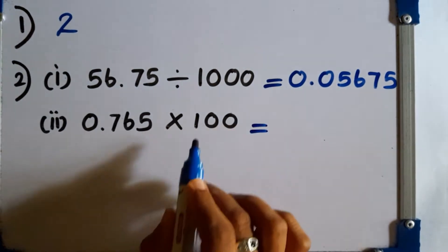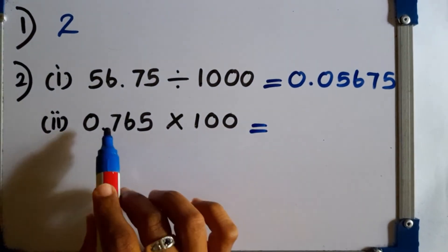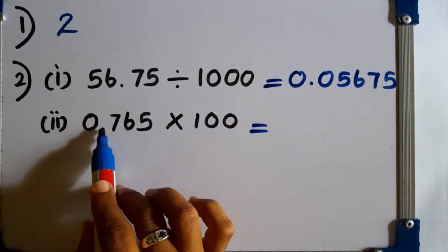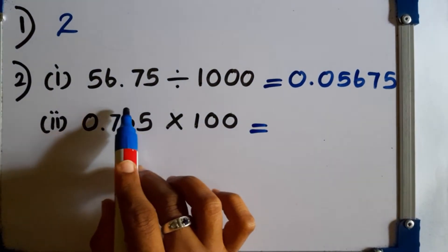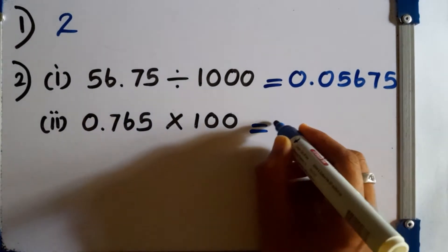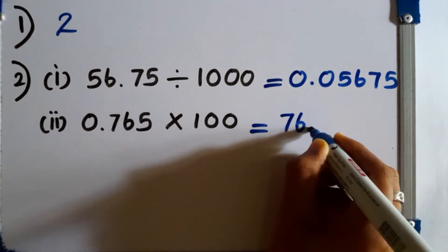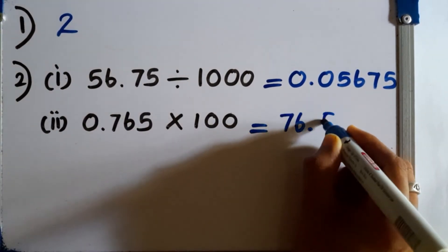Then, multiplying by 100, the decimal point goes 2 places to the right side. The answer is 76.5.